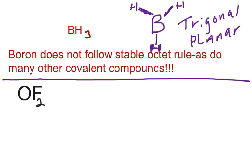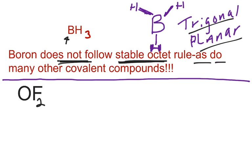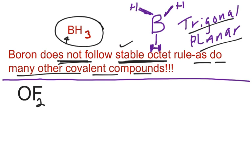There's another shape we didn't talk much about, called trigonal planar. The reason we didn't is that all the shapes we've been doing follow the stable octet rule. But it just so happens that boron, when it combines with hydrogens to form BH3 boron trihydride, does not follow the stable octet rule. Even though it's a legitimate shape, we don't talk about it much because we mainly go with molecules that follow the stable octet rule. When you go to AP or college, you'll see many covalent compounds that don't follow the stable octet rule.